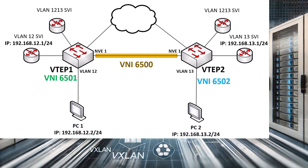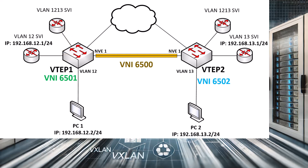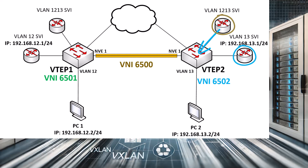The transit VNI is created to carry all inter-VNI traffic between VTEPs. In this scenario, if PC1 communicates with PC2, its packet will be sent to the default gateway, which is the VLAN 12 SVI, and it will then be routed to the SVI associated with our transit VNI of 6500, which is SVI 1213. Bridging now takes place, sending the traffic across VNI 6501, where it will reach VTEP2. Routing will take place again, routing from SVI 1213 to SVI 13, and then bridging will forward the packet to PC2.